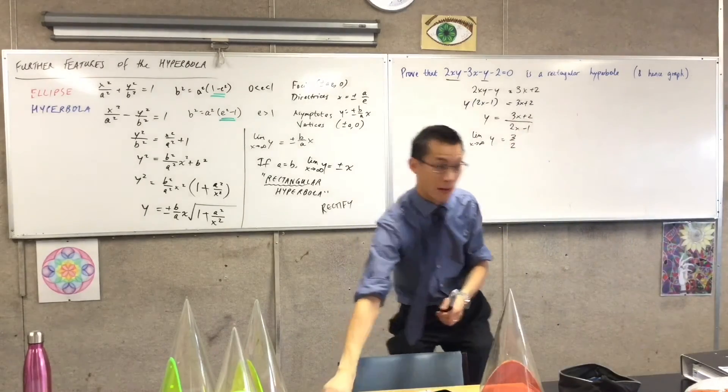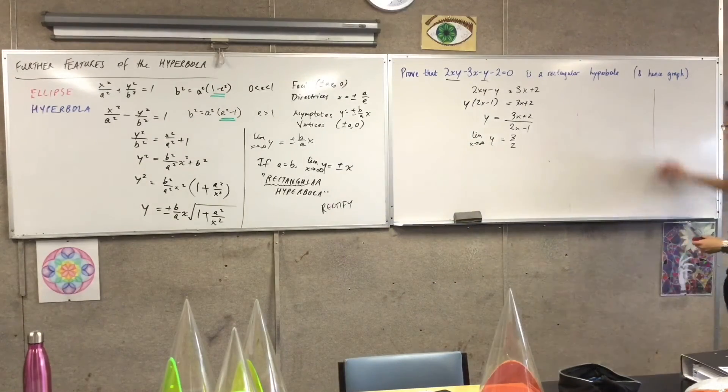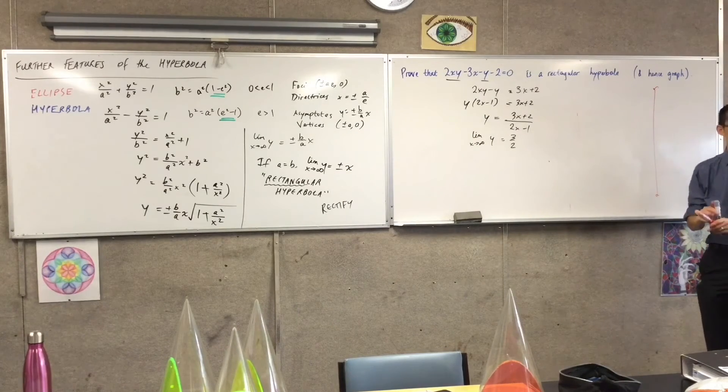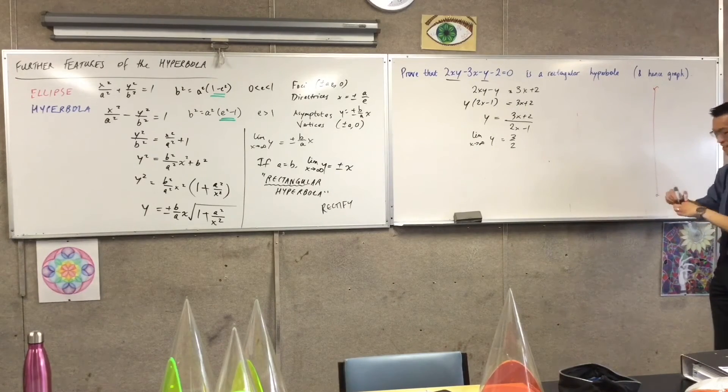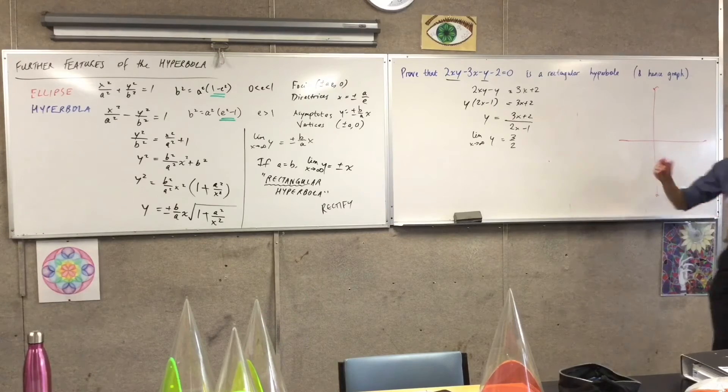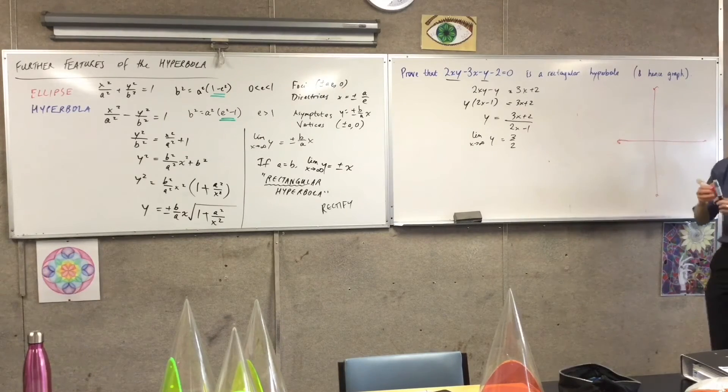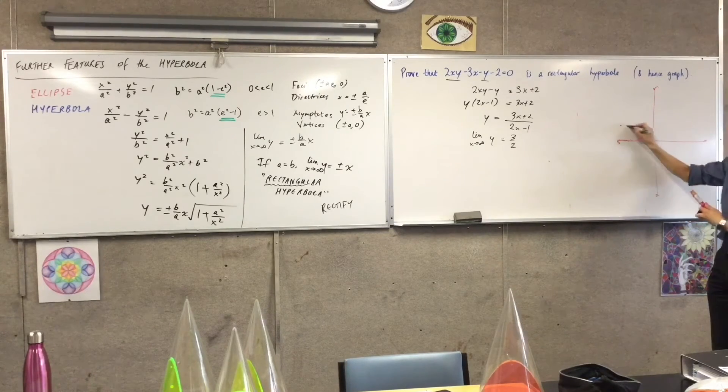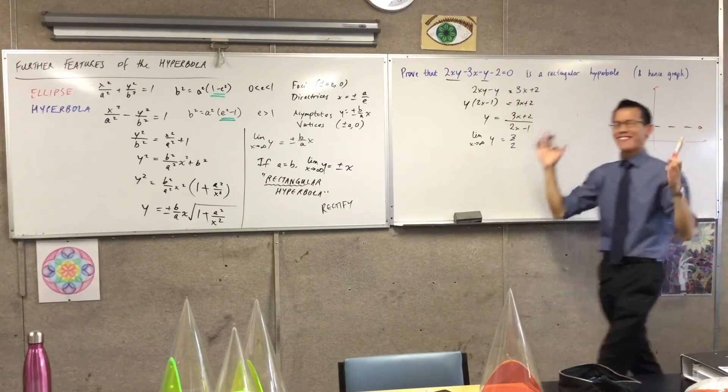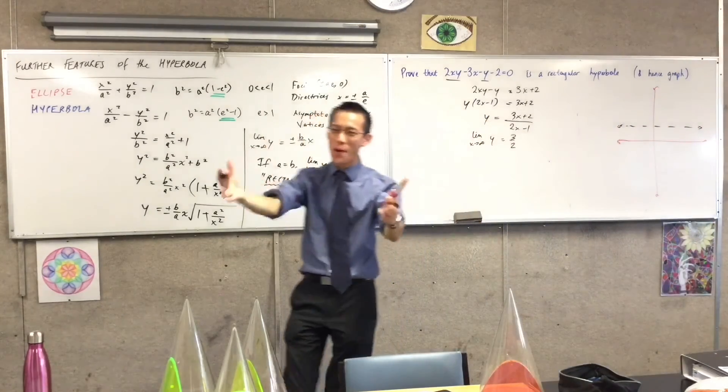You see how close you were? Make X the subject. So now I've got one asymptote, but of course, rectangular means you need to know both asymptotes.